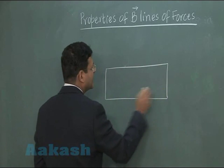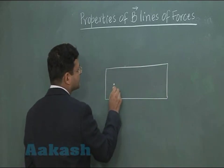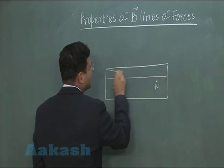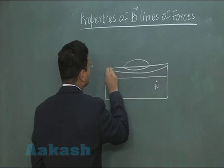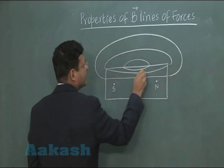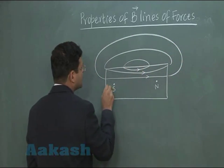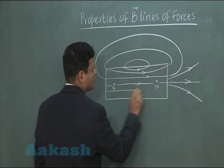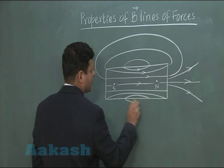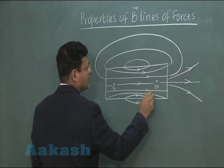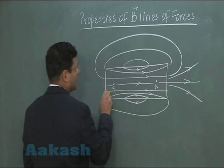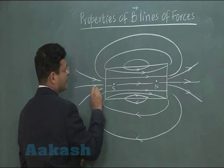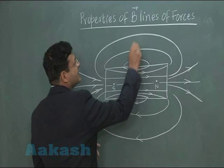For the sake of clarity I am drawing a large magnet — you have a south pole here and a north pole here. If you draw the magnetic lines of forces, you will have lines going like this. Inside they are going from south to north; you can have a similar situation here. Inside they are moving from south to north, but outside they are moving from north to south. These are the magnetic lines of forces inside and outside the bar magnet.